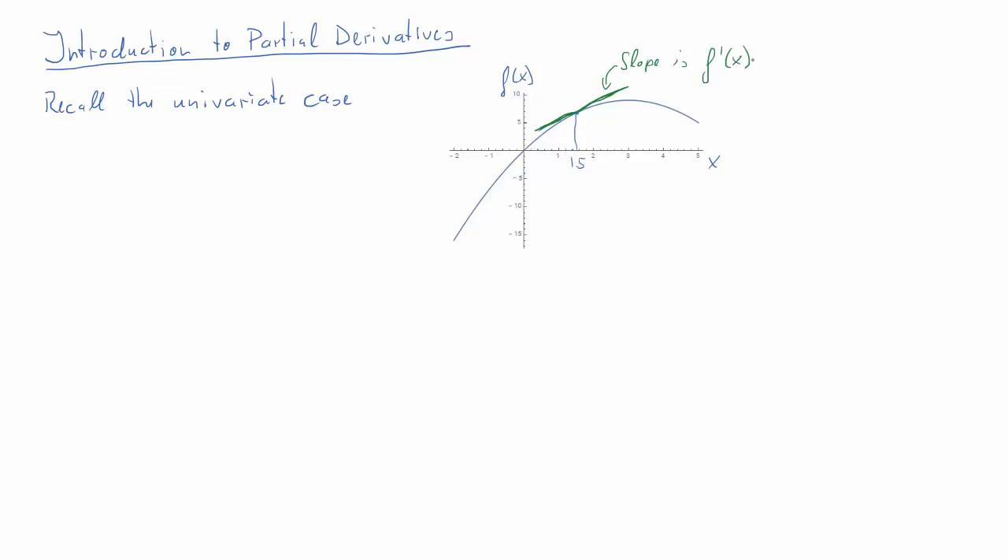We call that f prime of x, that's the derivative. Of course we had all sorts of rules of how we calculated derivatives if we knew the function.